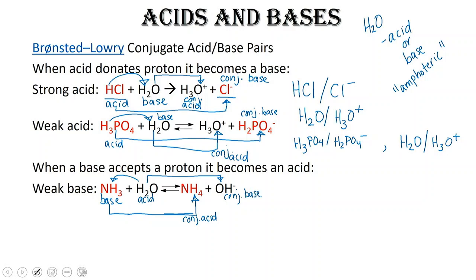So what are our conjugate acid-base pairs? We've got NH₃, NH₄⁺, and we've got H₂O and OH⁻.